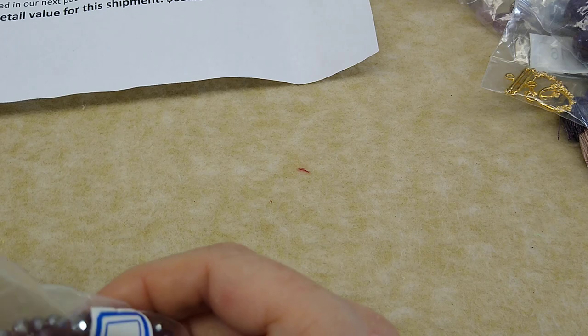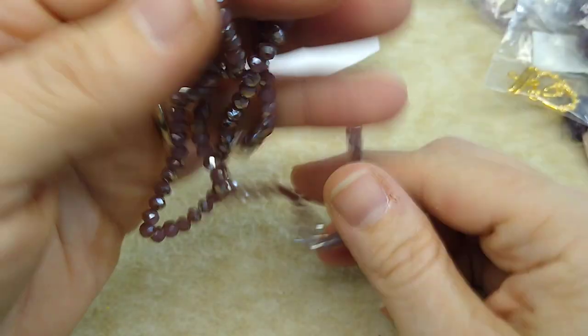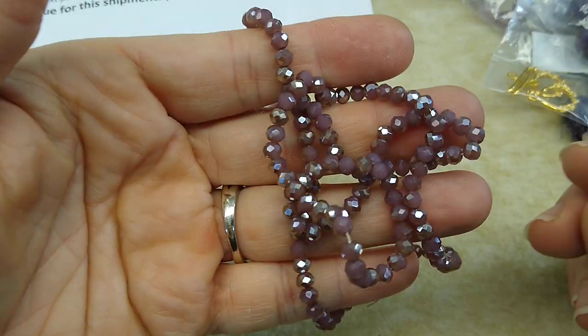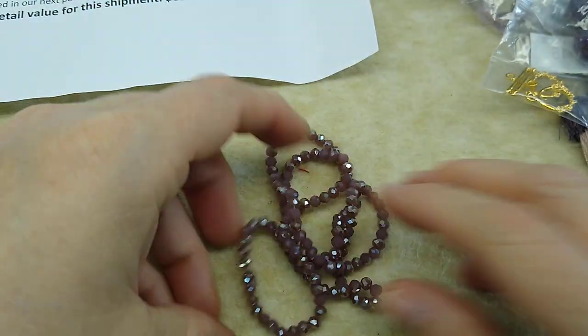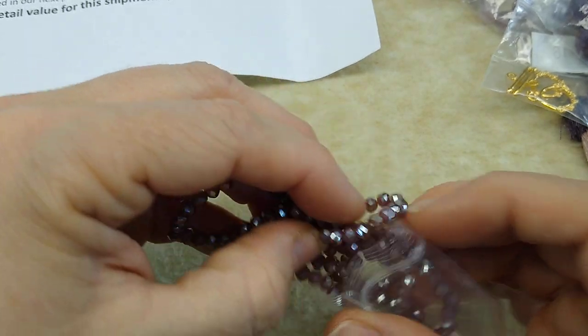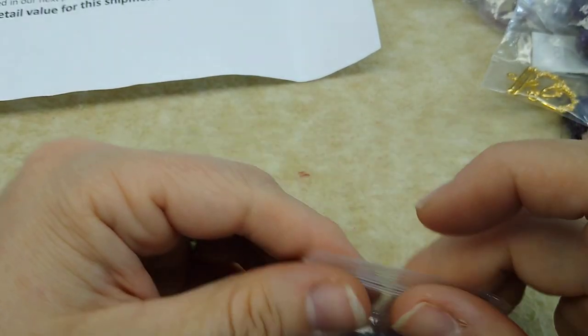Number 18. Approximately 18 inch strand of four by three crystal rondelle beads in violet shade shimmer, violet jade shimmer. Oh, how pretty. Look at the sparkle on those rondelles. Wow. And then I missed number five. I got so excited that I just flew right into this and plowed ahead and I missed number five and number 10.